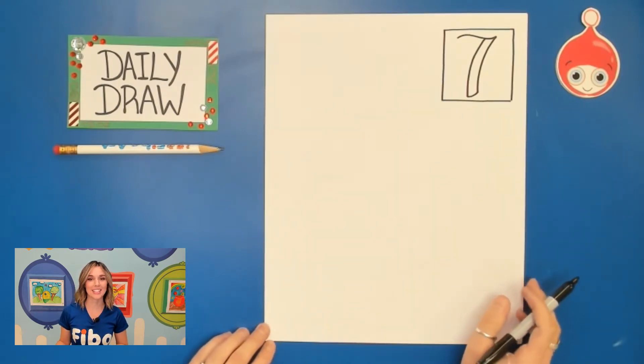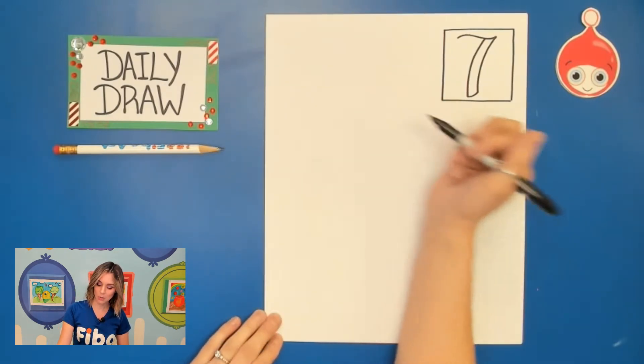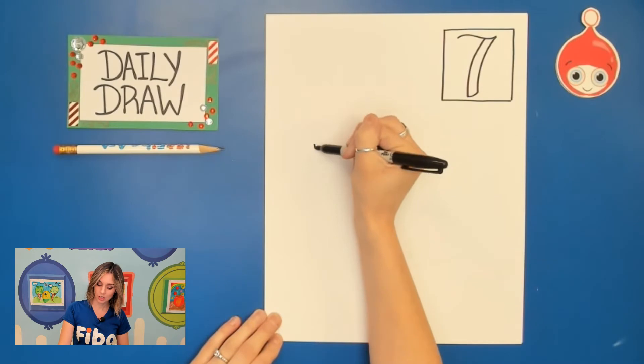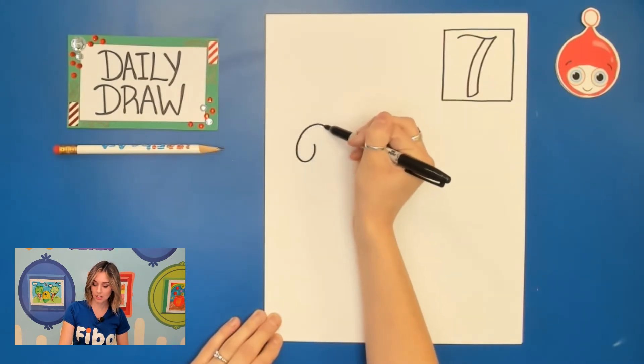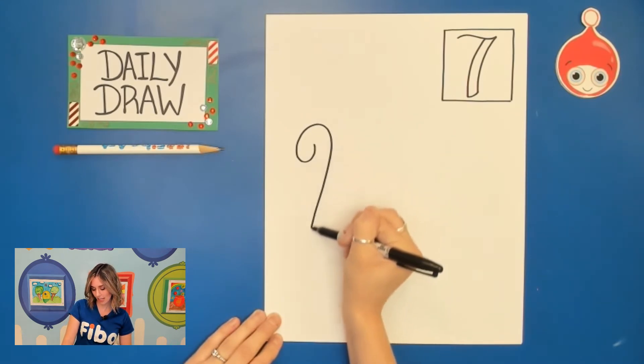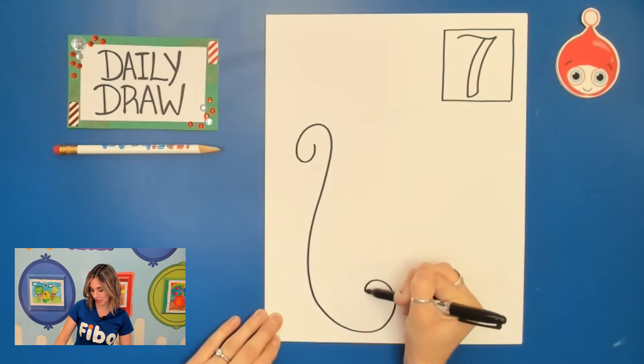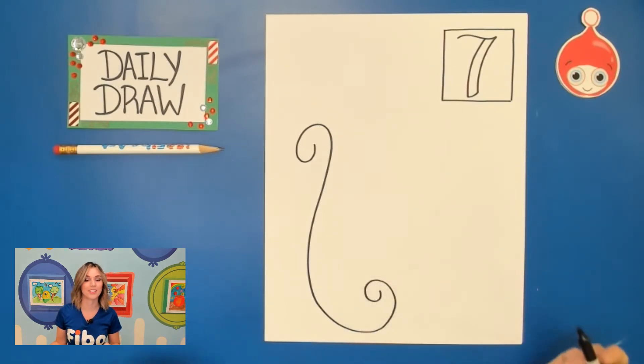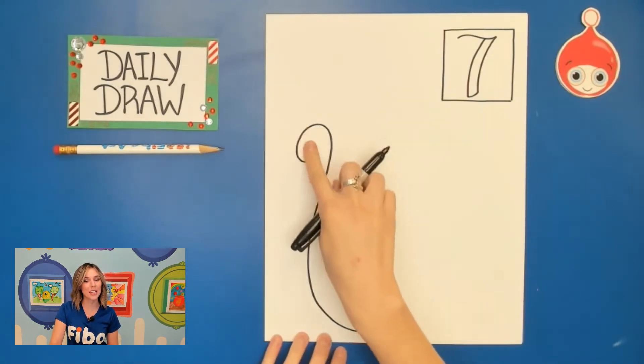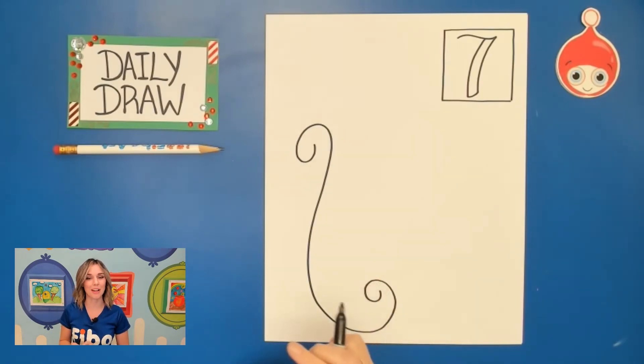Now for Santa's Christmas list, we're going to first curve down and up and then we're going to bring that curve down all the way around. So whatever you did up here you're doing the same thing at the bottom there.